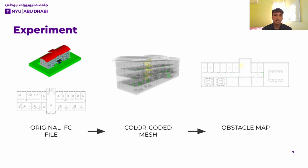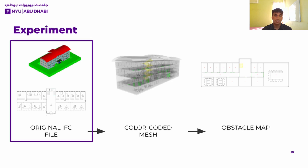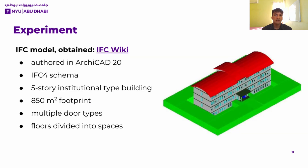Using this entire methodology, we ran an experiment using a sample IFC file and went through the explained steps. The model used was obtained from IFC Wiki, which is an online repository of IFC files, and it was authored in ArchiCAD 20, which is a popular BIM authoring tool. The file uses the more recent IFC4 schema, and it represents a five-story institutional-type building with an area of 850 square meters. It contains multiple door types, which is useful to test our JSON file output, and the floors are properly divided into spaces so that we can test the waypoint generation.